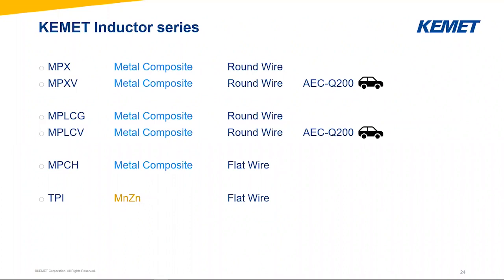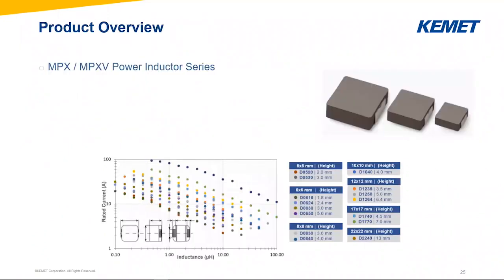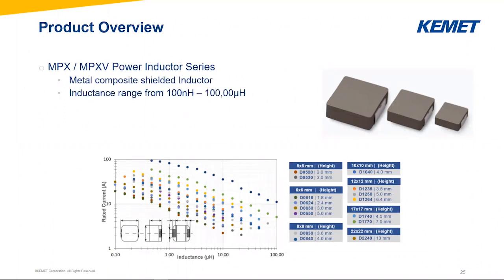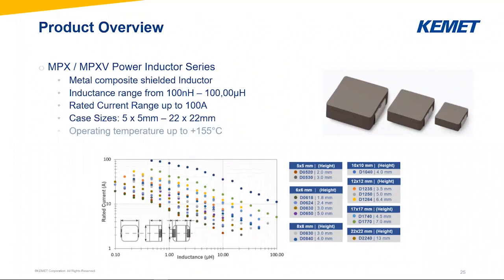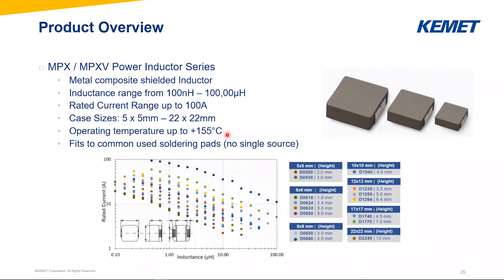Going into more detail on the product overview: the MPX and MPXV series are totally identical, and only if you need it for automotive application do you take the MPXV series. They are metal composite shielded inductors. The inductance range is from 100 nanohenry to 100 microhenry, and we can give rated currents up to 100 amps. Case sizes range from 5×5 mm to 22×22 mm. The most important advantage is the operating temperature range, which goes up to 150°C — even if you don't need 150°C, it's much better for high reliability and allows use at higher currents.